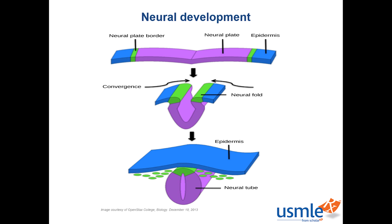Bone morphogenetic proteins are multifunctional growth factors. They play a role in heart, neural, cartilage and postnatal bone development. The activity of these proteins was first studied in the 1960s.